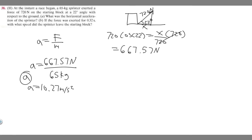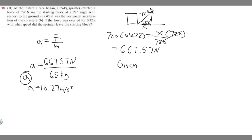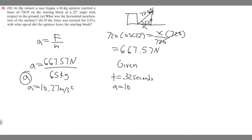Now let's do Part B. If the force was exerted for 0.32 seconds, with what speed did the sprinter leave the starting block? For this problem we're going to use kinematics because we're trying to find the final speed. We're given a time interval of 0.32 seconds, and our acceleration horizontally is 10.27 meters per second squared.